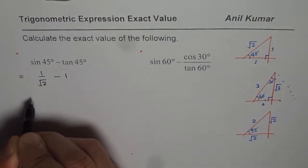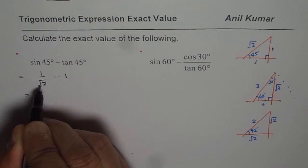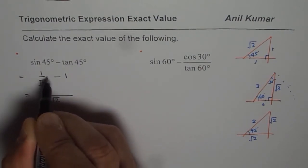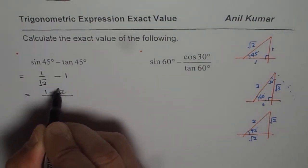So in this case, I have to really solve it. Common denominator is square root 2. And I get 1 minus square root 2 as my answer.